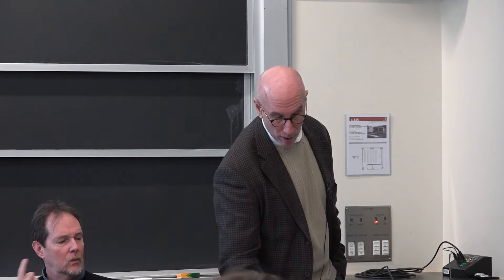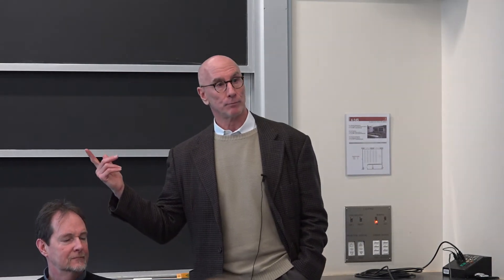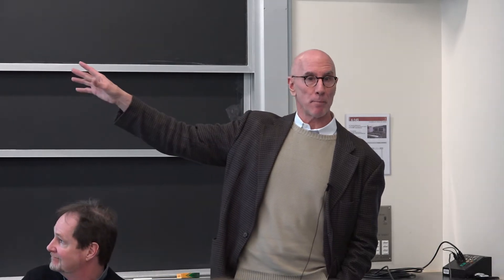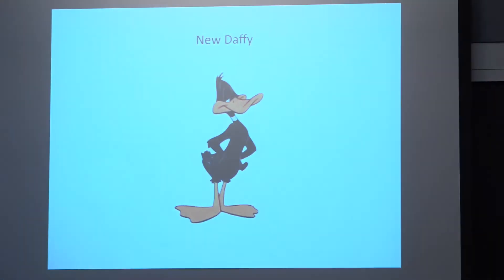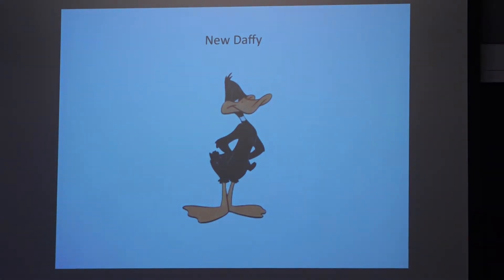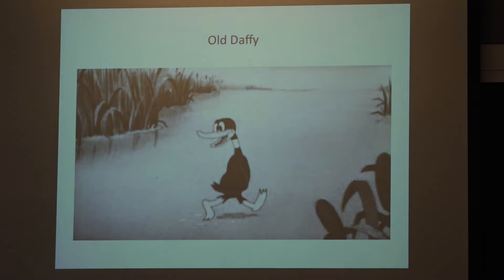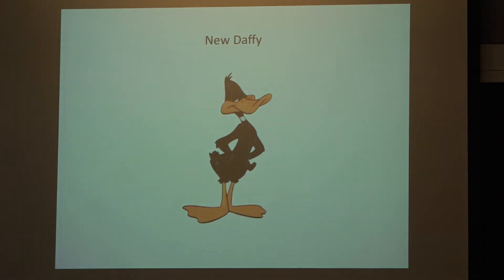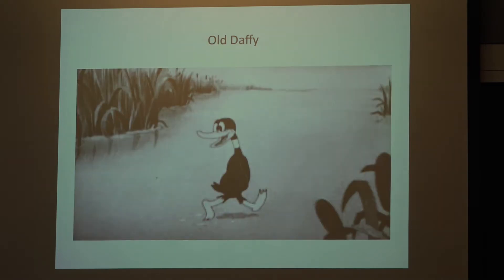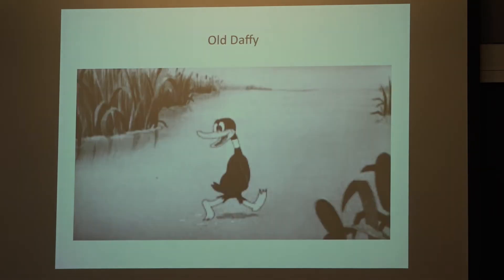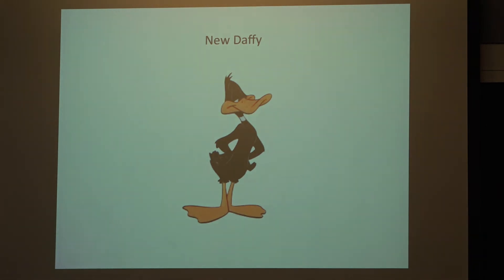The originality requirement doesn't have to amount to much — especially with software and materials processes. If you can think of a way of streamlining a process or improving it, even slightly, that's separately protectable. Old Daffy has a separate copyright and separate trademark; new Daffy has a completely separate copyright and completely separate trademark. They're the same character, but they're different — and that's an example of the originality requirement. It's not only a graphic depiction but the image projected, the personality conveyed by the image, that qualifies as original content.